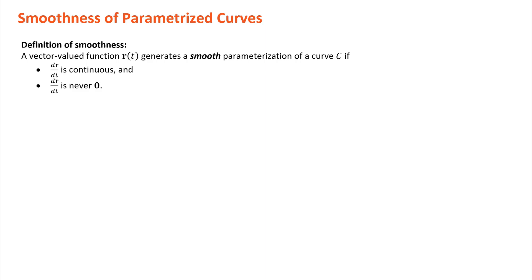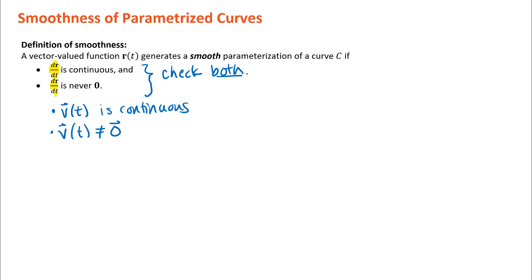A vector-valued function r(t) generates a smooth parameterization of a curve if we have two conditions that we have to check. You need to make sure that both of these conditions are checked. Both conditions are really about the derivative vector dr/dt, or sometimes we might state this in terms of v(t). That's the zero vector — so we're not just talking about one component being zero, we're talking about all of the components being zero.